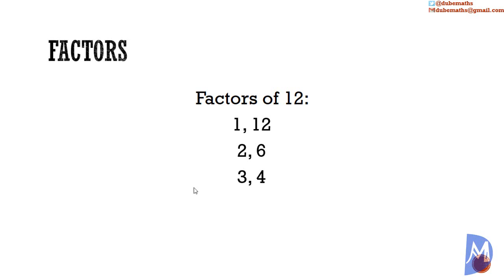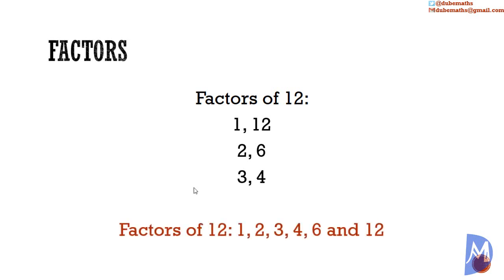When listing factors in this way, checking each number in turn, when you reach a number already listed, you are done. The list of factors of 12 are 1, 2, 3, 4, 6, and 12.